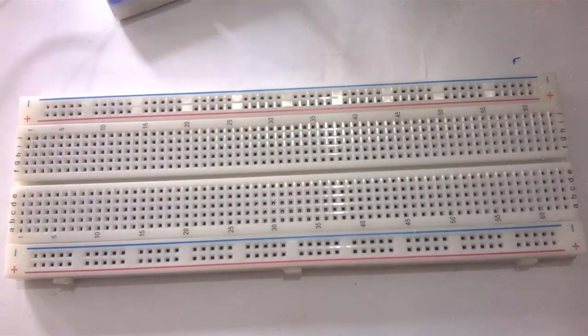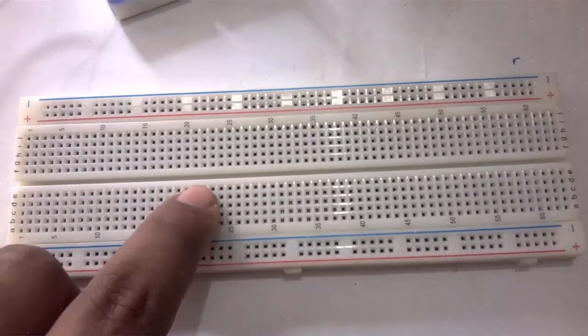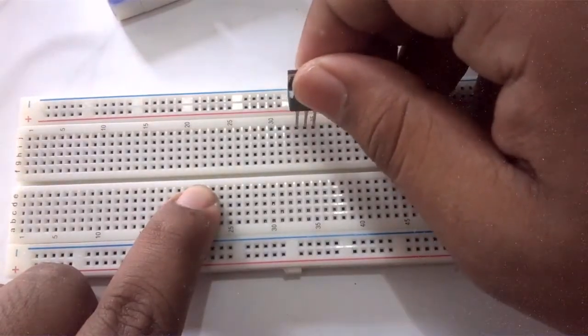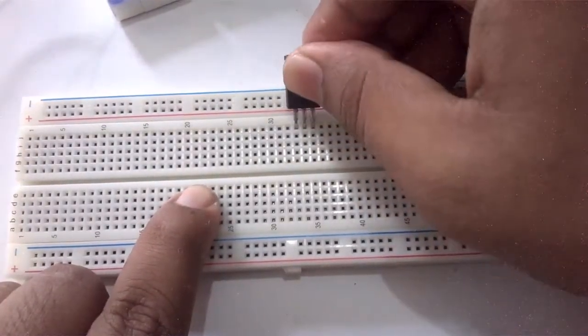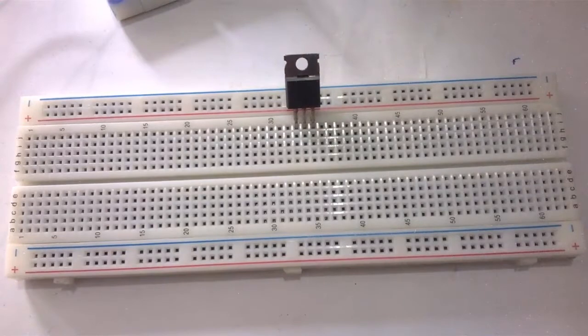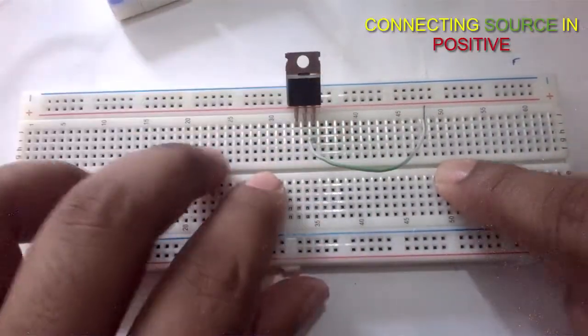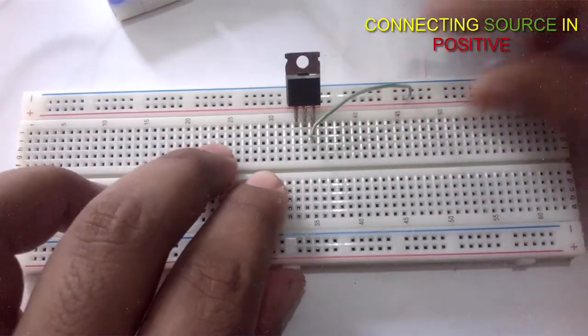So in the breadboard, the MOSFET is connected. The last pin of the breadboard is Source, and the Source is connecting in the positive side of the breadboard.